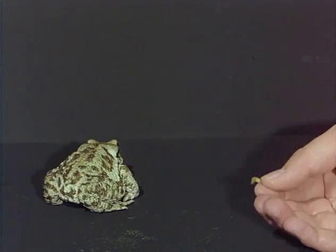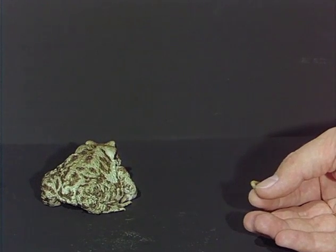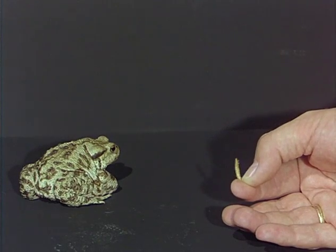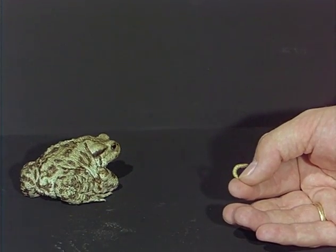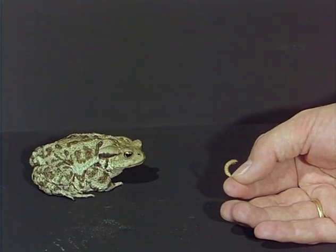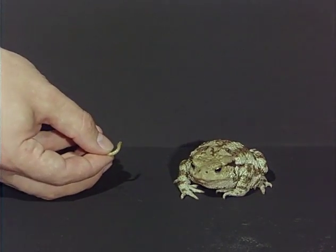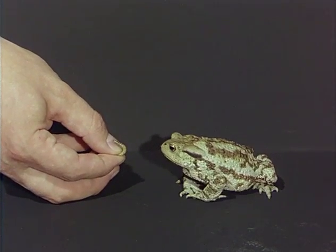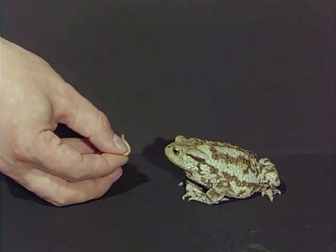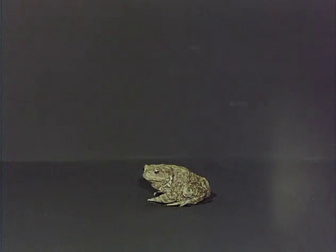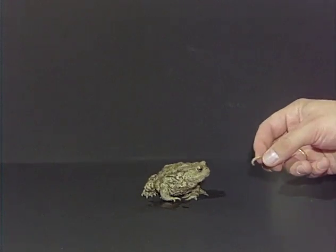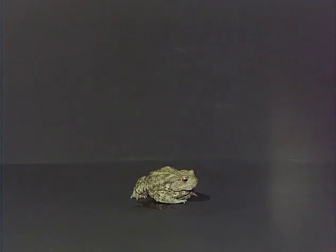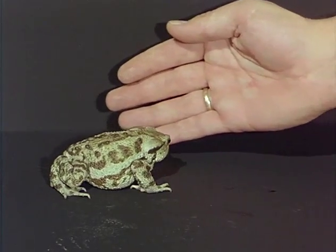By hand-feeding, a toad can be trained to include the hand in the prey schema. A naive toad hesitates before accepting a mealworm from the experimenter's hand. This feeding method is repeated daily until the toad becomes conditioned to the stimulus situation and snaps at the prey. After a fortnight, even the moving hand alone elicits prey capture.